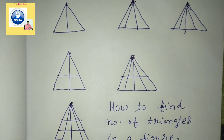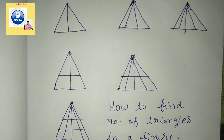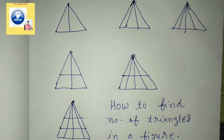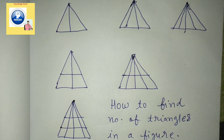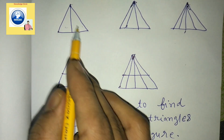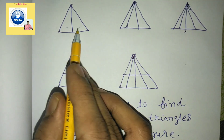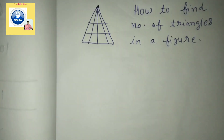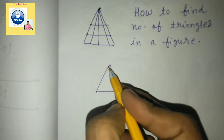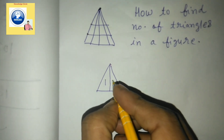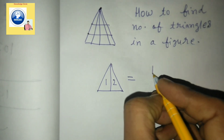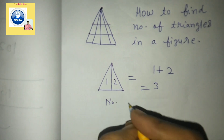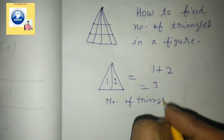Today I'm going to tell you a trick — with the help of this trick, counting the number of triangles will be done within five seconds. Here you can see a triangle divided into two parts. The rule is very simple: label them one and two, then add: one plus two equals three. So the number of triangles is three.